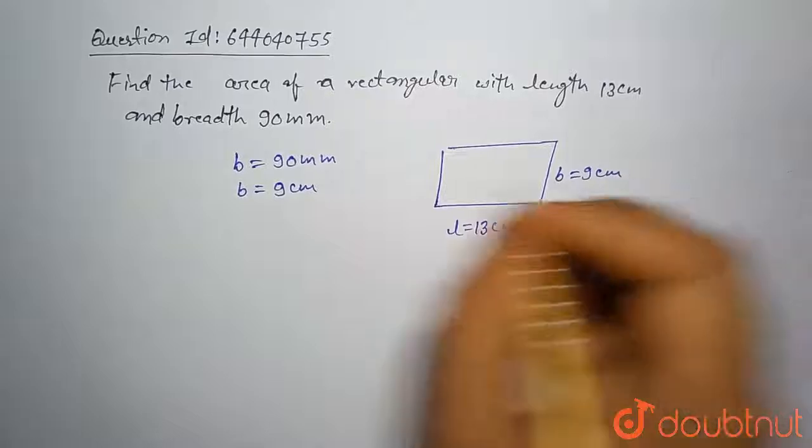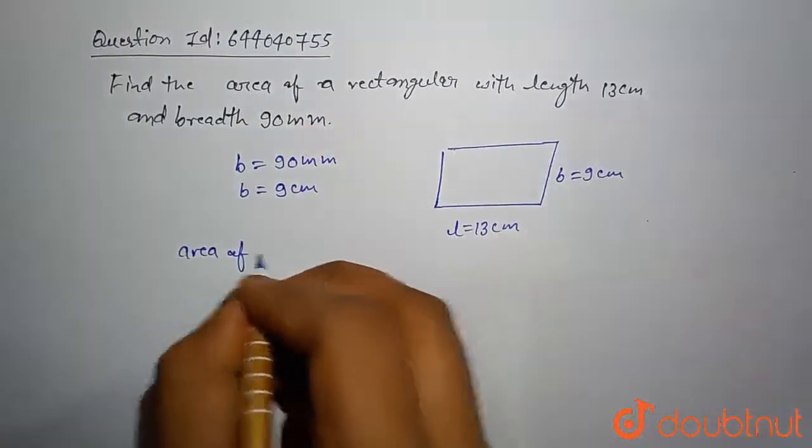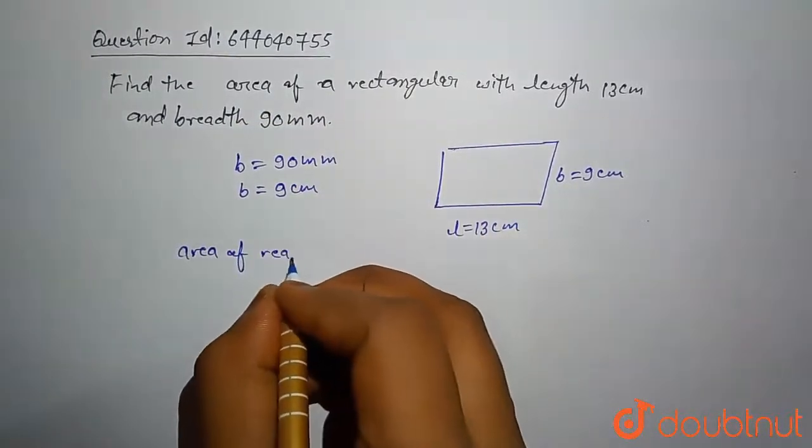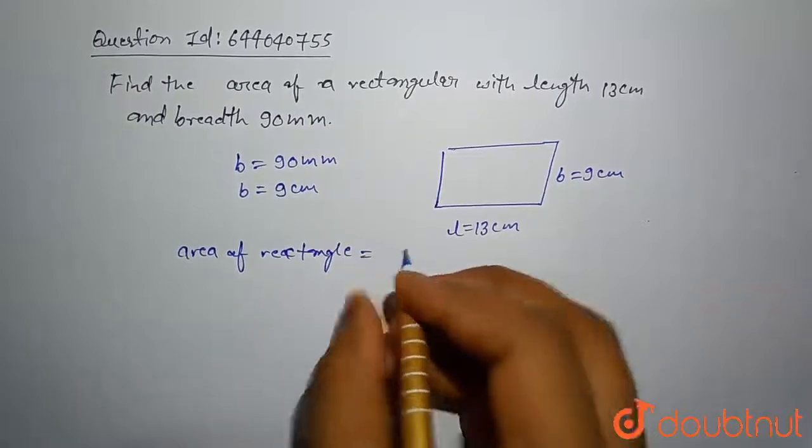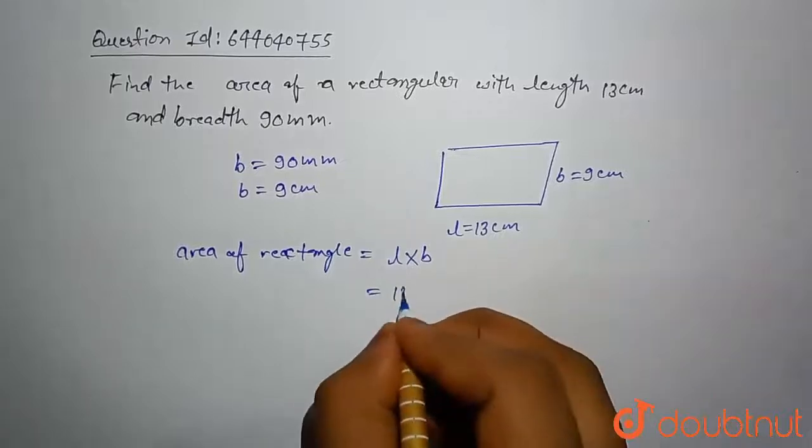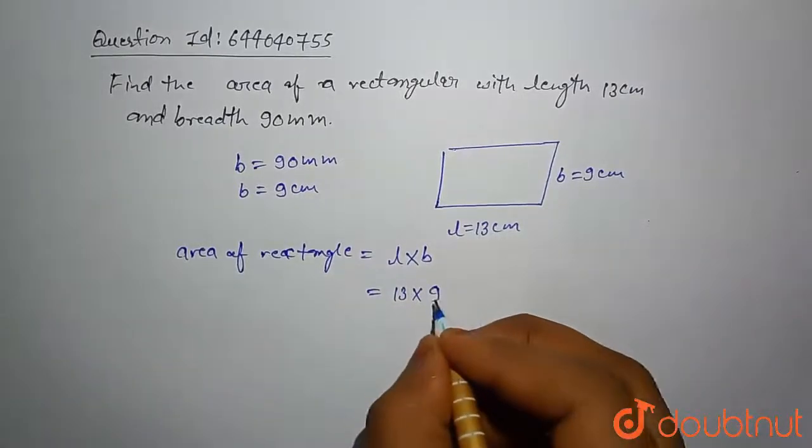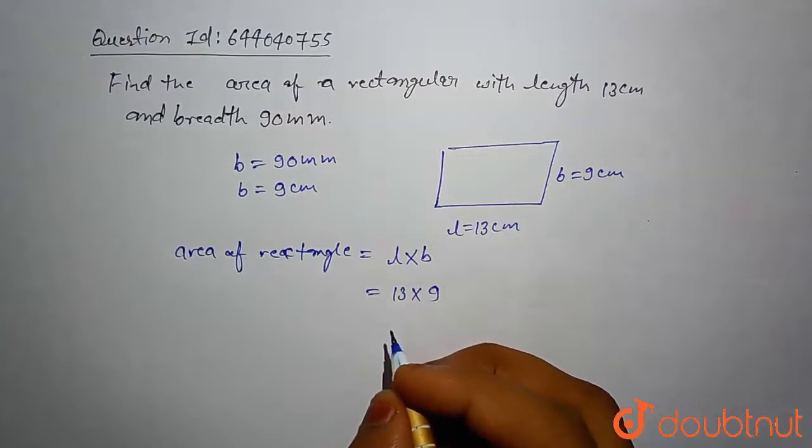Then area of this rectangle - area of rectangle is equal to length into width. Here length is given 13 and width is given 9, which comes out...